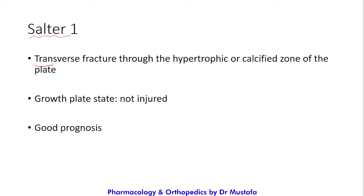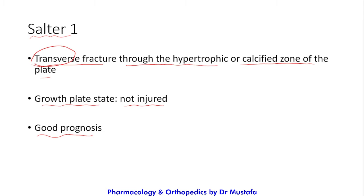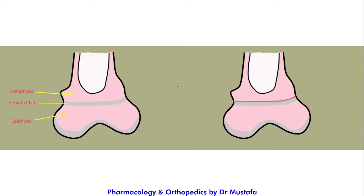Salter-Harris Grade 1 is a transverse fracture through the hypertrophic or calcified zone of the growth plate. The growth plate itself is not injured and it has a good prognosis. In the simplified drawing, we have the epiphysis, the growth plate, and the metaphysis — and the Grade 1 fracture is transverse through the growth plate.